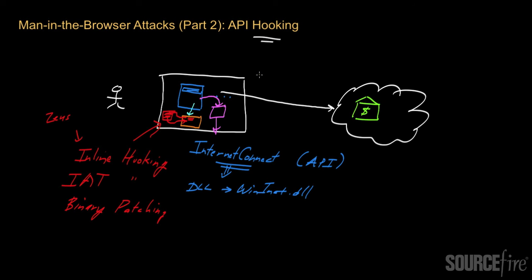Man-in-the-browser attacks are typically implemented using API hooking. API hooking is a way by which data is manipulated between an application and lower-level system calls that application makes — and the upshot is that the interaction has been corrupted between the user and that application. Since you can't just block API hooking to detect or prevent man-in-the-browser attacks, in the next video I will cover existing approaches for detecting and blocking these types of attacks.